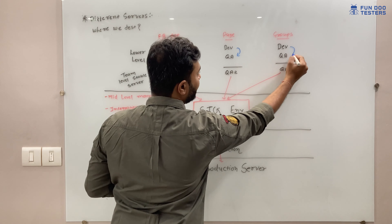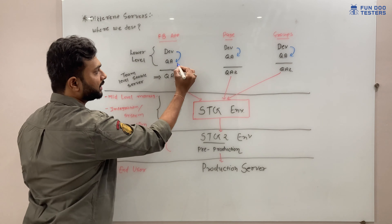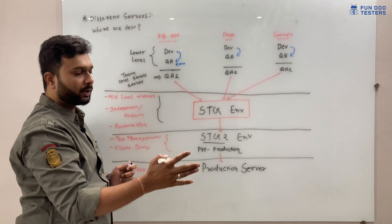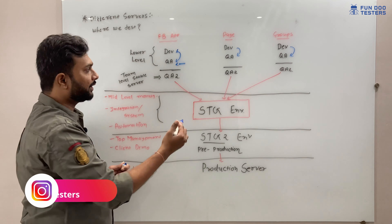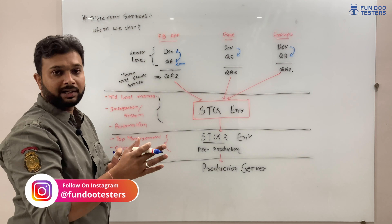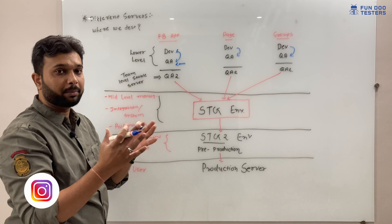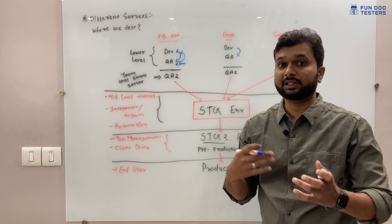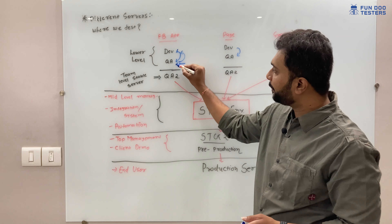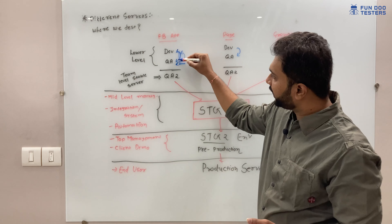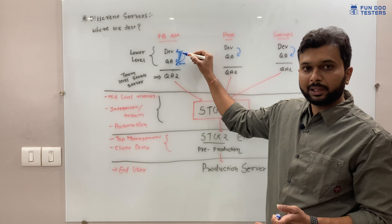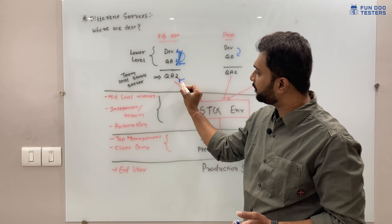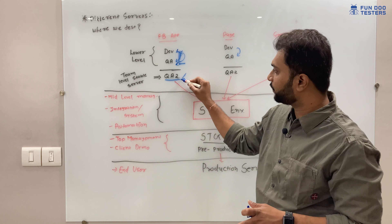Once developers build any functionality, they push their code into the QA environment. In the QA environment, testers come into the picture and start testing the application. There are two different environments because developers and testers do different activities - if testers change data or break something, it impacts development, and if developers deploy something it impacts the testers. That's why there is a separate development server and QA server.